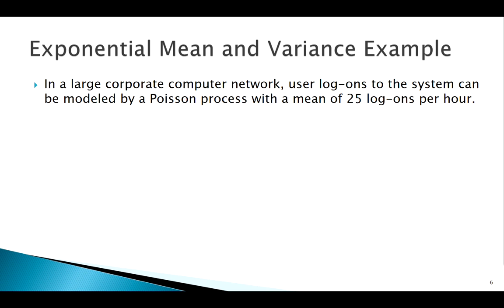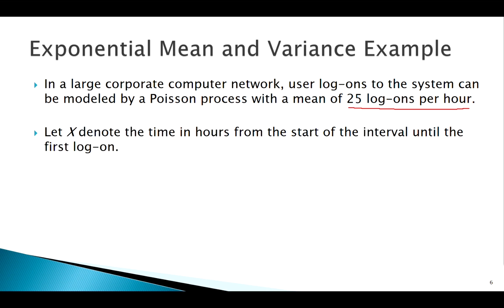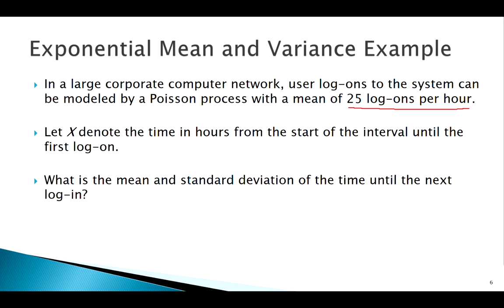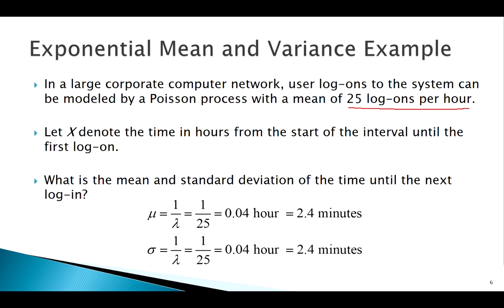Let's look at this example: logons to the system with a mean of 25 logons per hour. Let our random variable X be the time of the interval until the first logon. What's the mean and standard deviation? We could just reason this out — 25 logons per hour means the next logon is expected in 1/25th of an hour, which is 0.04 hours or 2.4 minutes. Notice the standard deviation is actually the same.